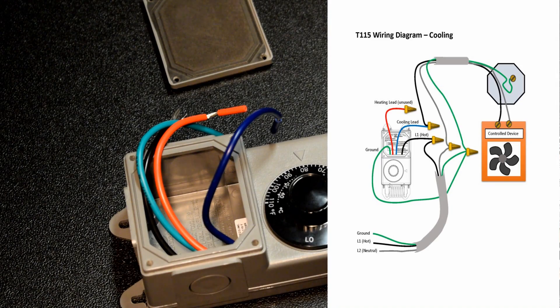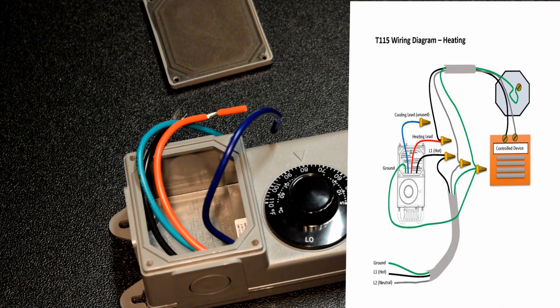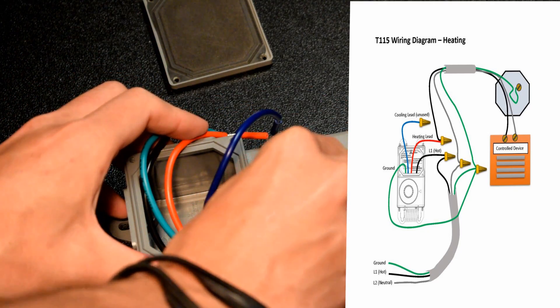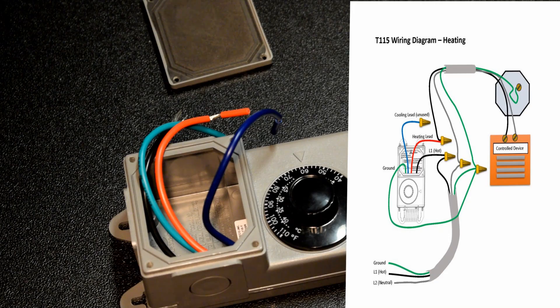Likewise, you can also throw a heater on one of these. So if your greenhouse got too cold, the red wire attached to the heater would be powered whenever there's a demand for heating. So say you had to keep your greenhouse above 60 degrees, you'd turn the knob to 60 degrees, and whenever the temperature fell below there, the red wire would be powered and the heater would be on.